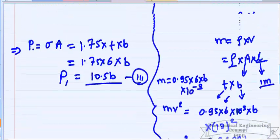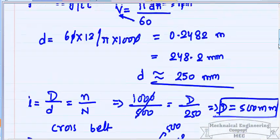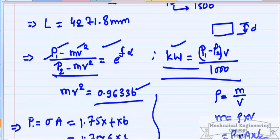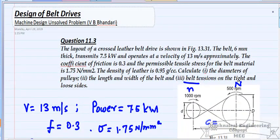This is the complete method to solve this belt drive problem. Remember the key formulas: the velocity-diameter relation, the cross belt length formula, the tension ratio formula, and the power formula — all available in the machine design book by V.B. Bhandari. If you have any doubts, please comment below. Thank you and have a good day.